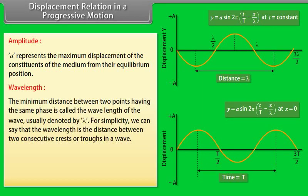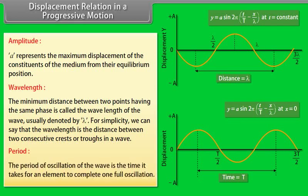Wavelength: the minimum distance between two points having the same phase is called the wavelength of the wave, usually denoted by lambda (λ). For simplicity, the wavelength is the distance between two consecutive crests or troughs in a wave. Period: the period of oscillation of the wave is the time it takes for an element to complete one full oscillation.